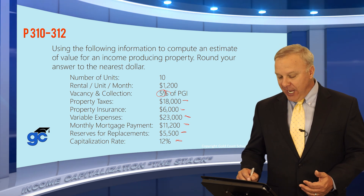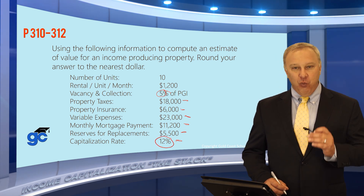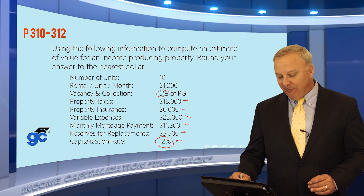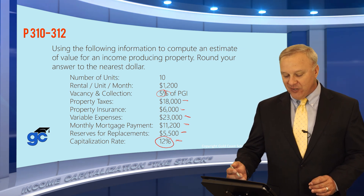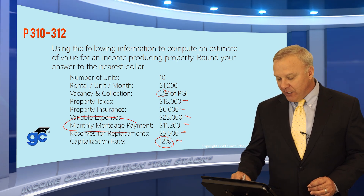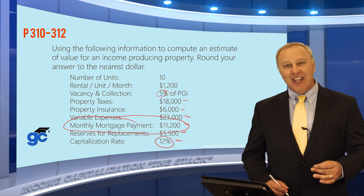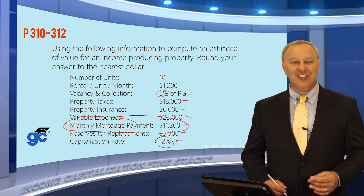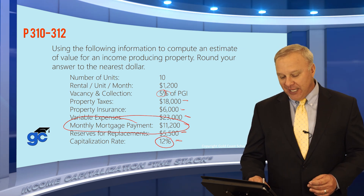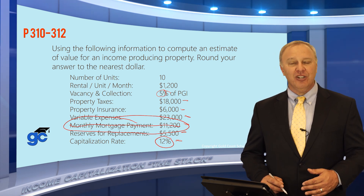Very similar to the last question, you'll have to figure out the NOI and then use the rate to estimate the value. One thing to point out: they gave you a bunch of expenses — property taxes, insurance, variable expenses, reserves — but they also threw in monthly mortgage payments. Be careful: monthly mortgage payments are not an operating expense. Cross off those monthly mortgage payments so you're not tempted to include them.